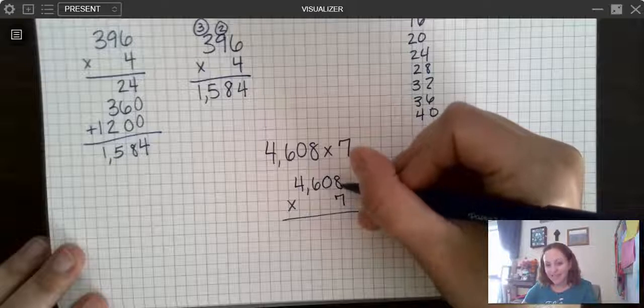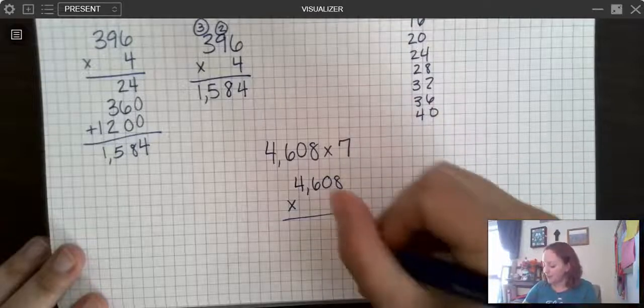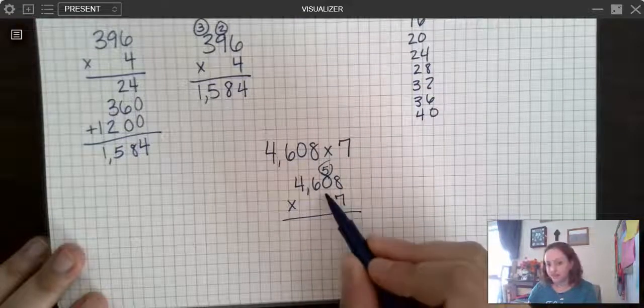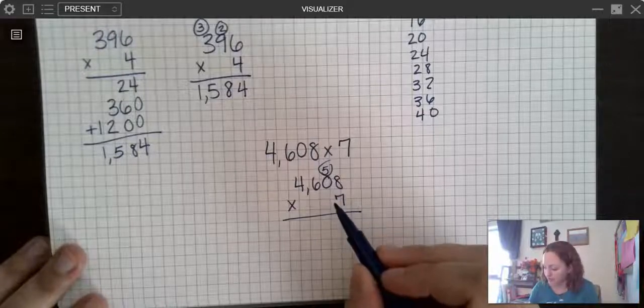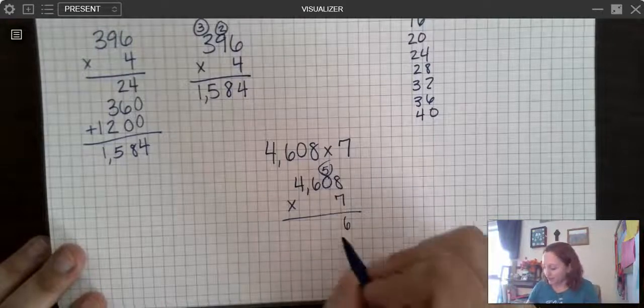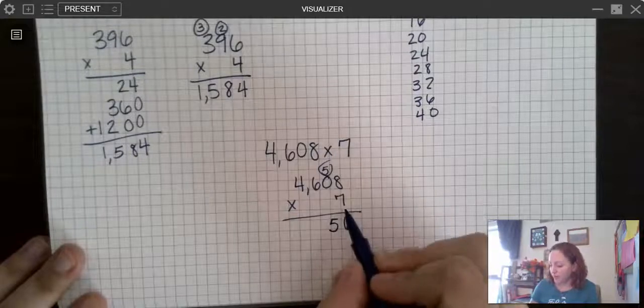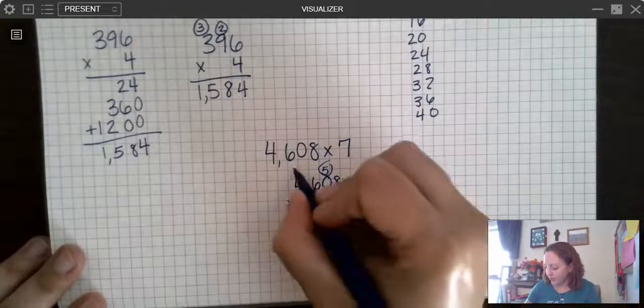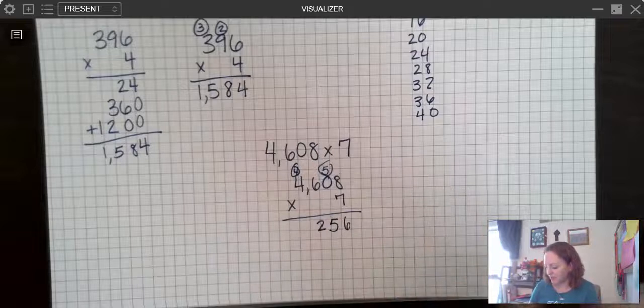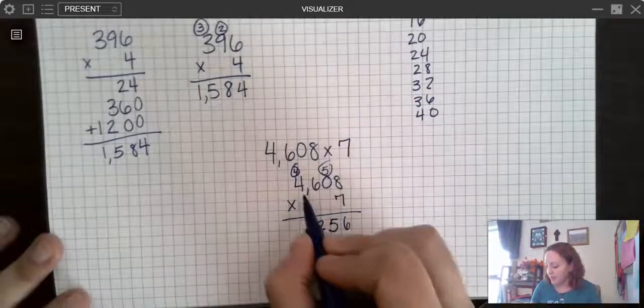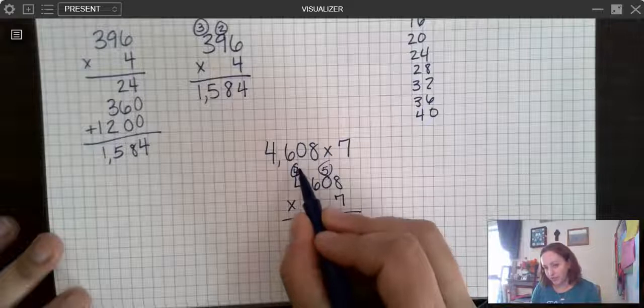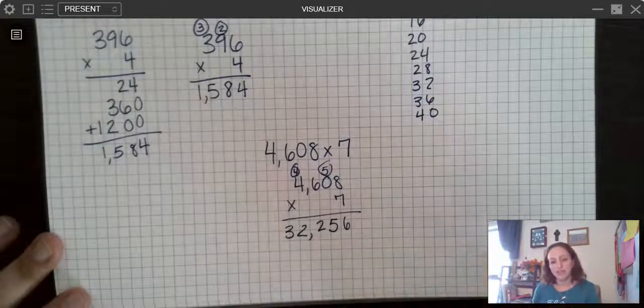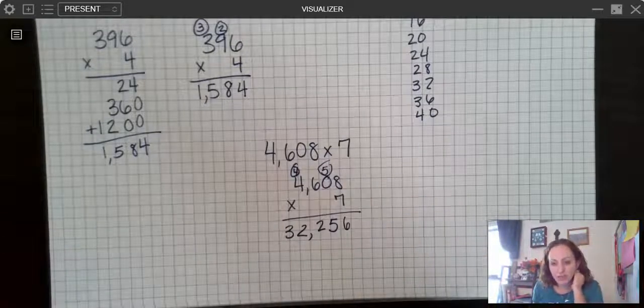Let's do seven times eight. Seven times eight is 56. So remember I write my ones place, regroup my tens place. Now I have seven times zero. Anything times zero is zero, but I have to add in my five. So zero plus five is five. Now I have seven times six. Seven times six is 42. Write my two, regroup my four. I didn't have anything to add that time because I didn't regroup before. And then I do seven times four. Seven times four is 28 plus four more is 32. So 32,256 would be my answer.